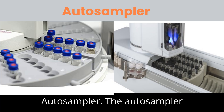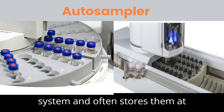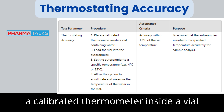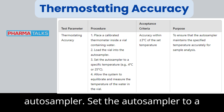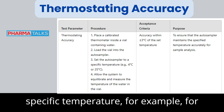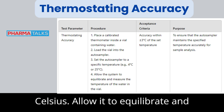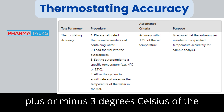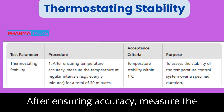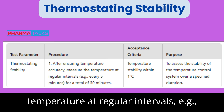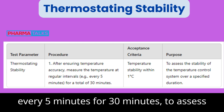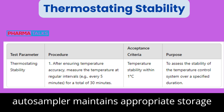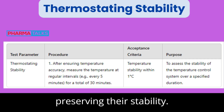3. Auto Sampler. The auto sampler automatically loads samples into the HPLC system and often stores them at controlled temperatures. Thermostating Accuracy: place a calibrated thermometer inside a vial containing water and load it into the auto sampler. Set the auto sampler to a specific temperature, for example 4°C or 25°C, allow it to equilibrate, and measure the temperature of the water in the vial. Accuracy should be within ±3°C of the set temperature. Thermostating Stability: measure the temperature at regular intervals (e.g., every 5 minutes for 30 minutes) to assess stability, which should remain within 1°C. These tests verify that the auto sampler maintains appropriate storage conditions for sensitive samples, preserving their stability.